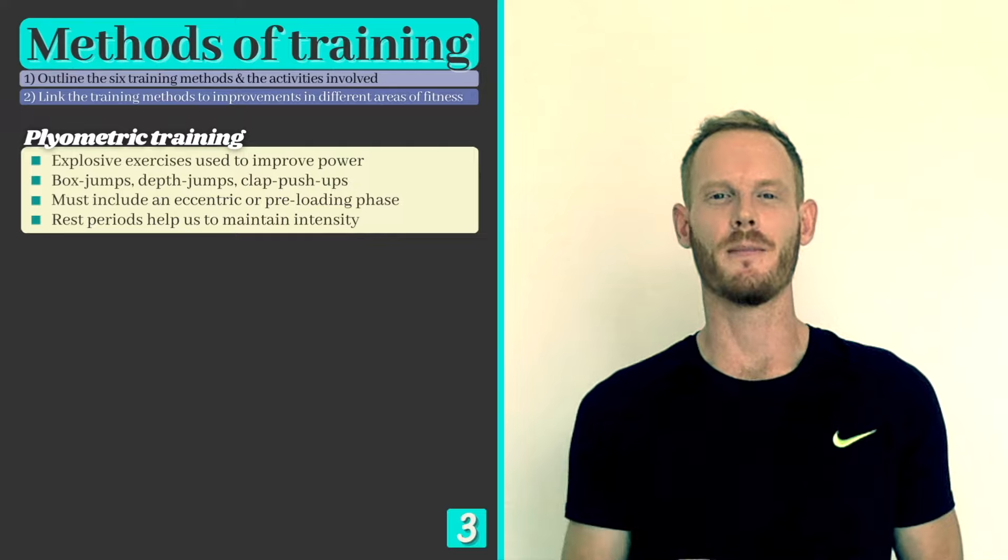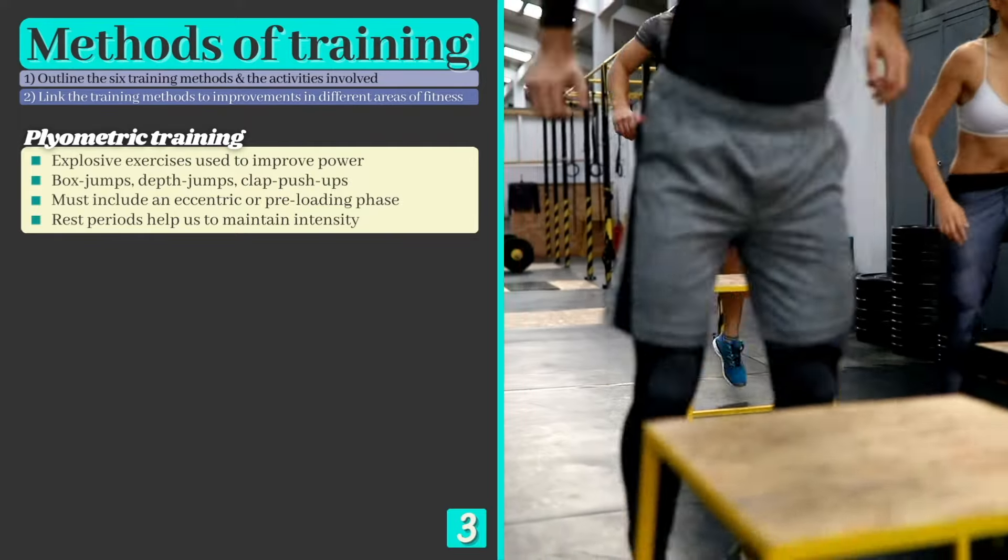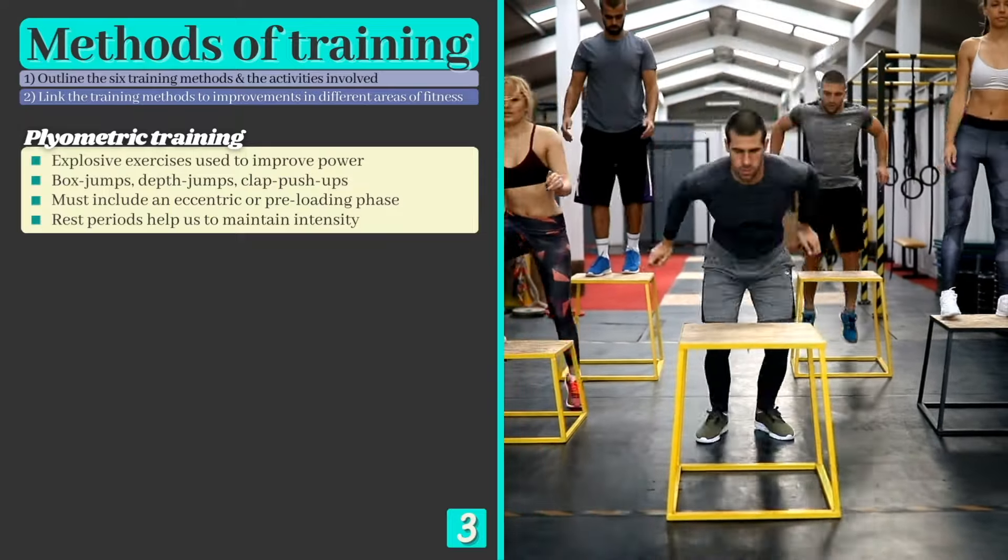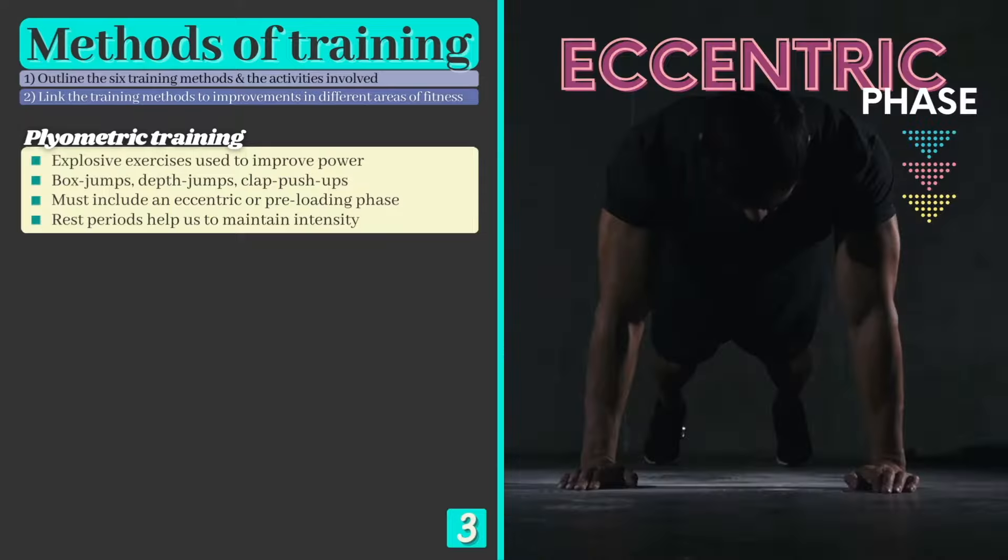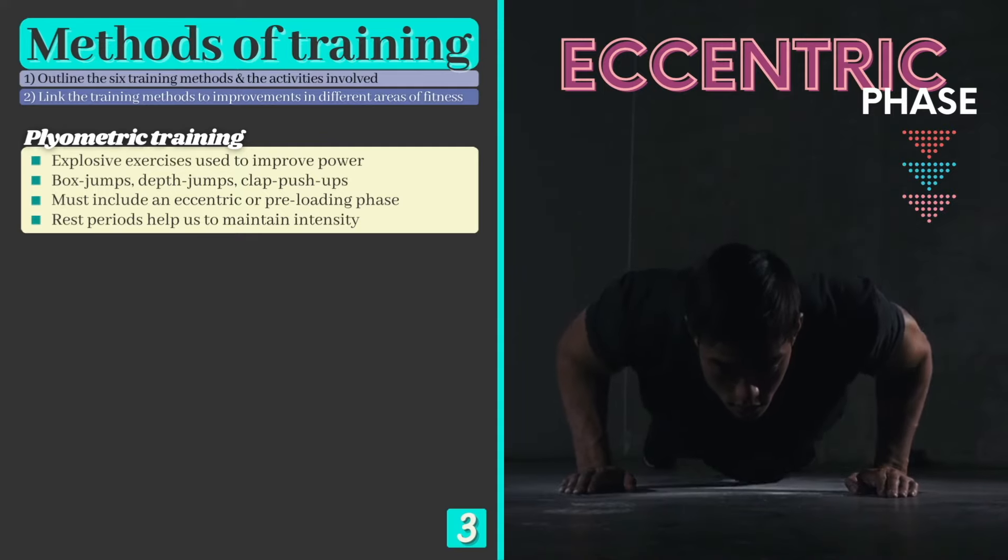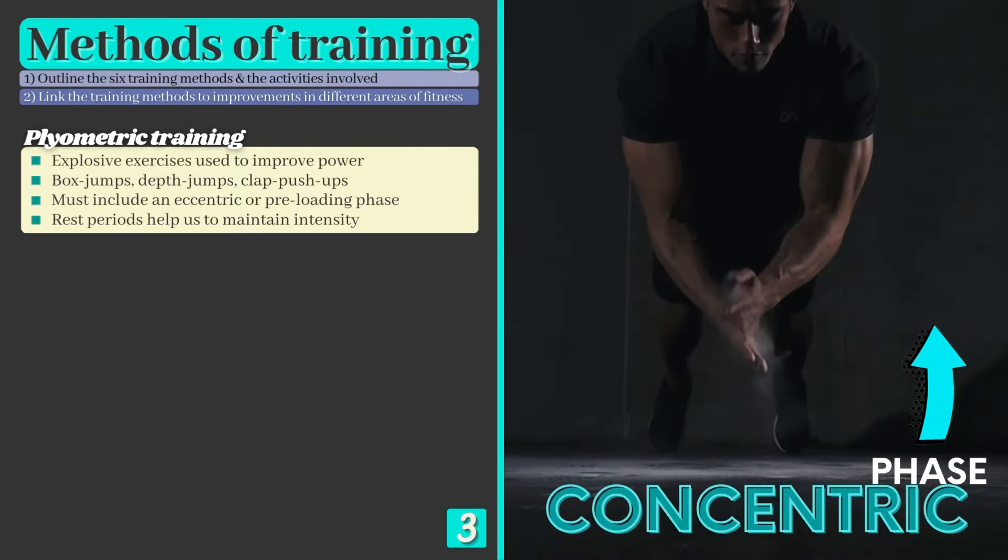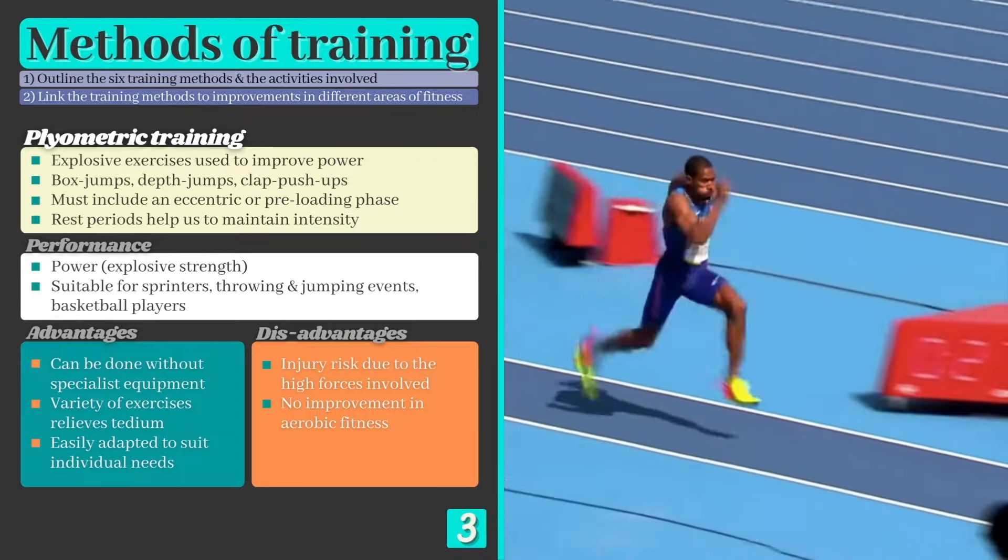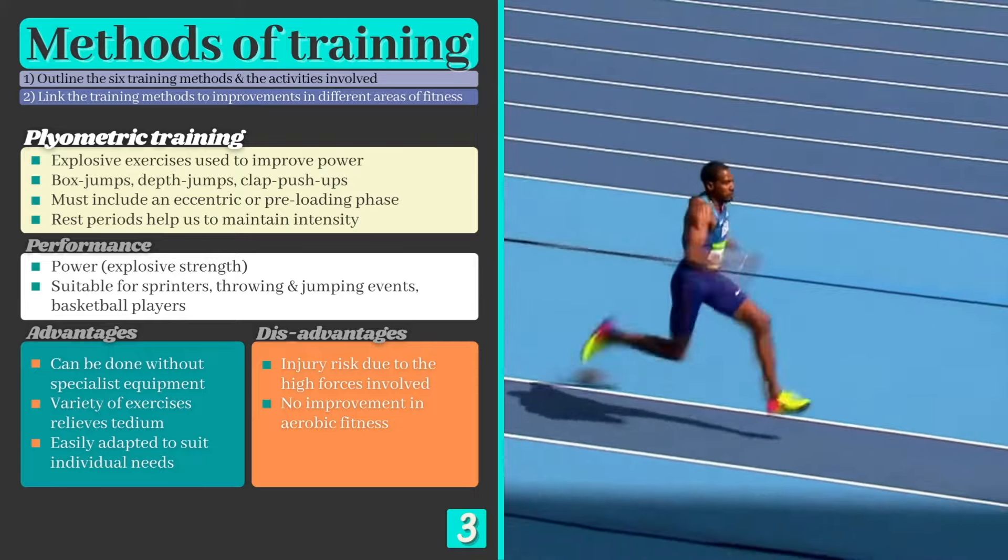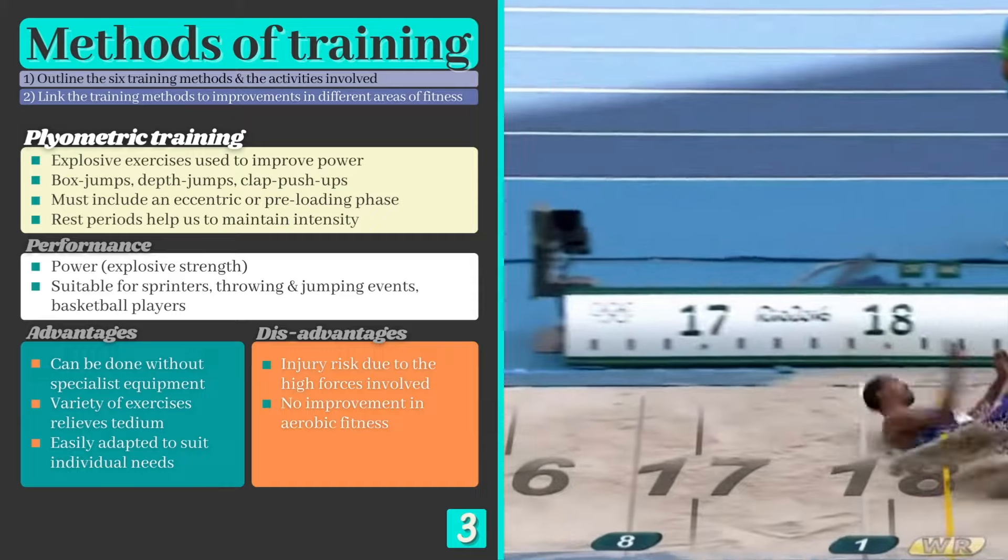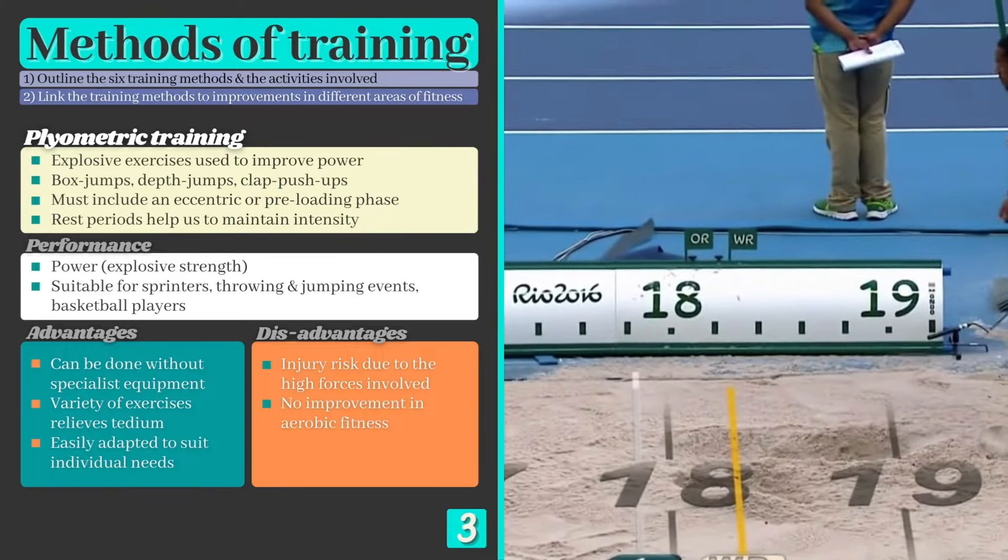Training method 3: plyometric training. Plyometric training involves explosive exercises such as squat jumps, box jumps, or clap push-ups and is used to develop power. When performing a plyometric exercise, it's essential to include an eccentric or pre-loading phase where the muscle lengthens briefly before shortening and exploding upwards. Plyometric training is used by athletes such as triple jumpers as they rely on explosive movements to be successful. People using this training method need to take care, however, as the high levels of stress placed on the muscles increases the risk of picking up an injury.